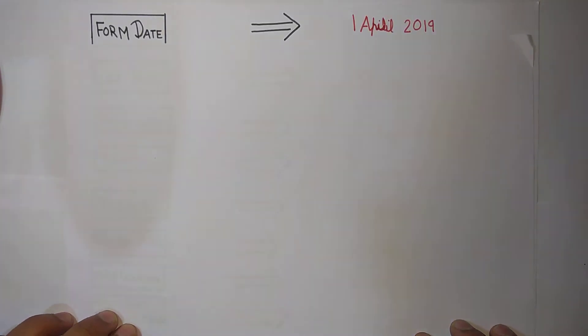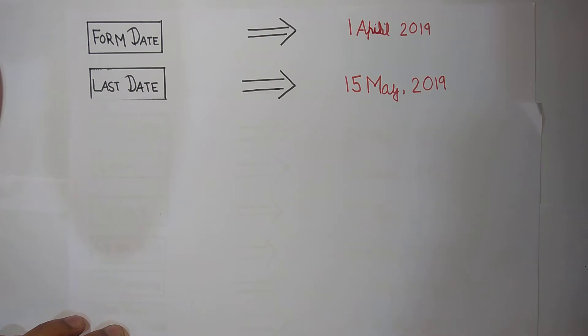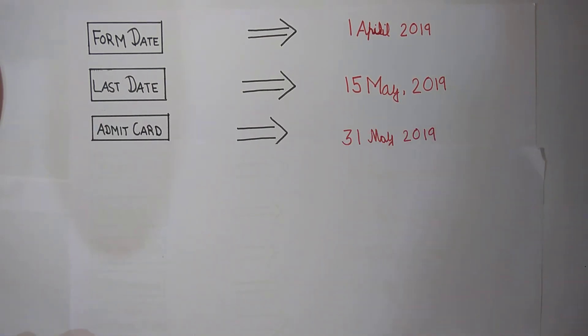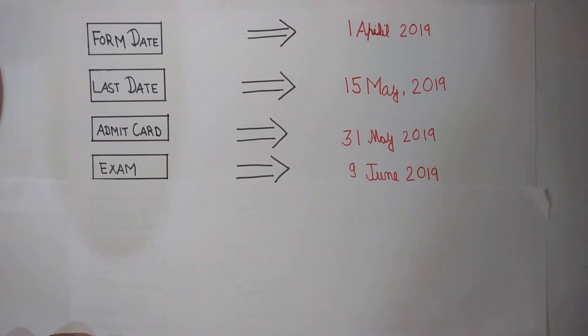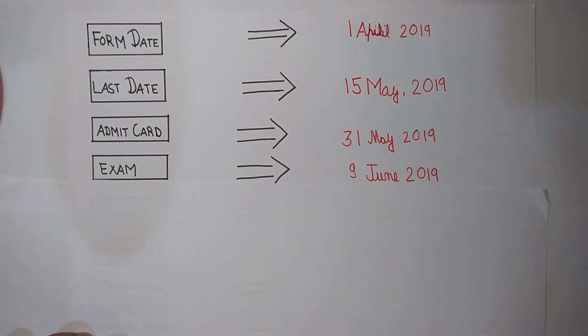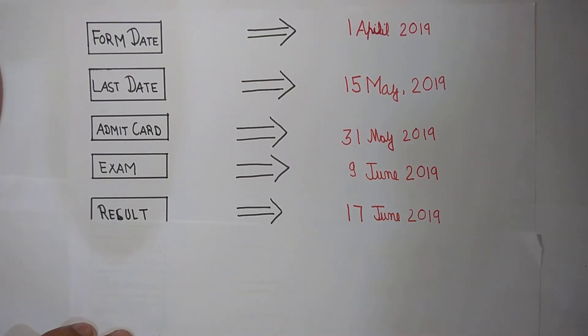Form date is 1st April 2019. Last date of this form is 15th May 2019, and the admit card you can download is 31st May 2019. The exam date is 9th June 2019, and the result will be uploaded on 17th June 2019.